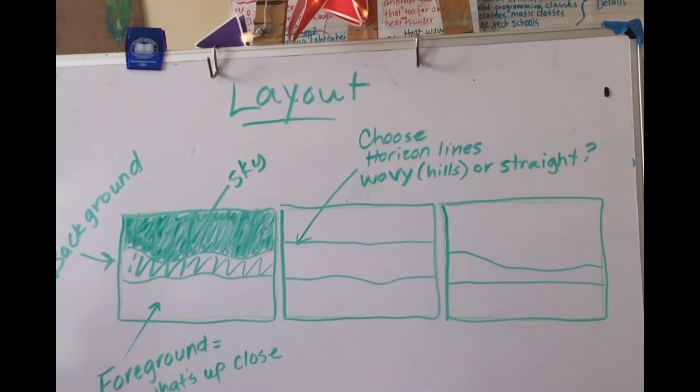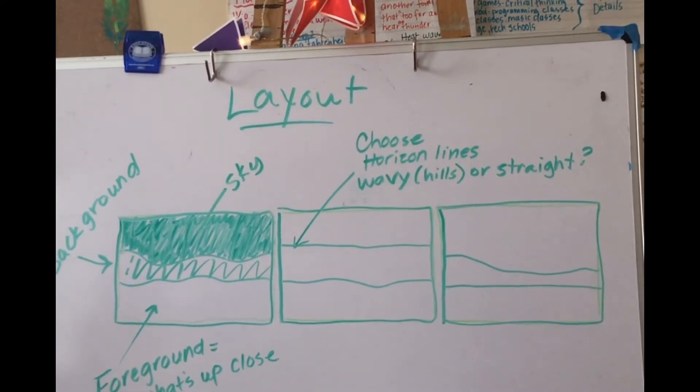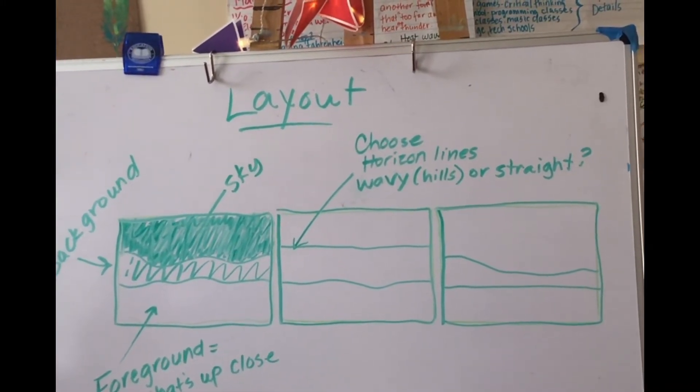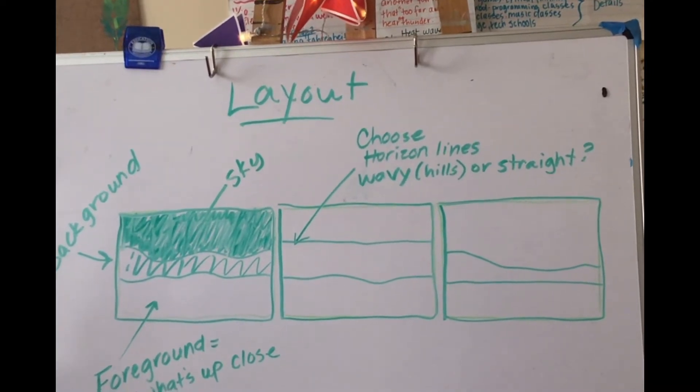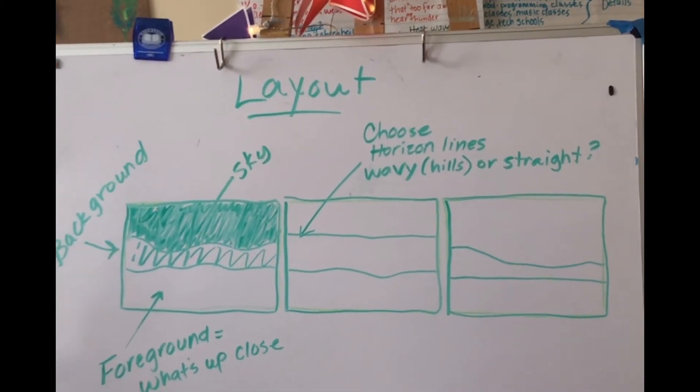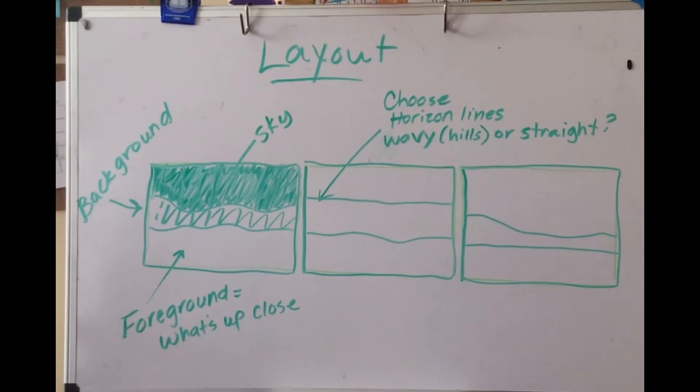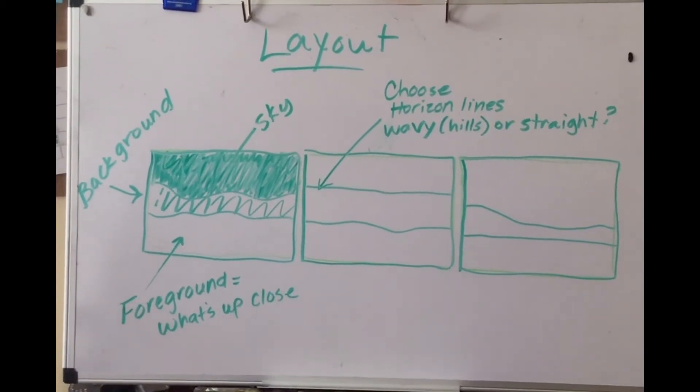So the top part is going to be your sky, the middle is going to be your background, and the front will be what you would see up close and you have to make that decision. Use a very light pencil line because watercolors are transparent which means you can see right through it.